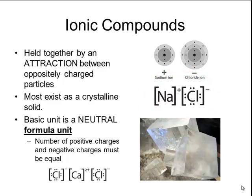In a formula unit of calcium chloride, calcium atoms will lose two electrons to form a cation with a 2 plus charge. So in order to balance out that positive 2 charge, we need two chlorine anions to create a neutral formula unit.